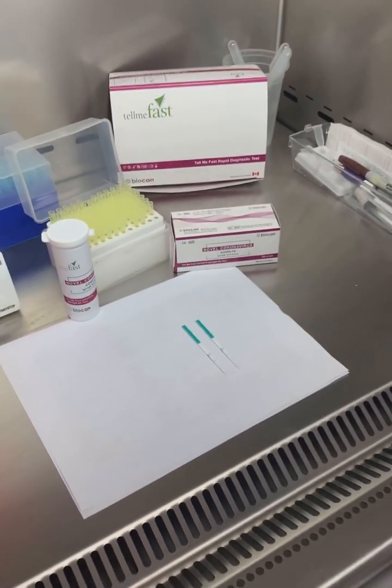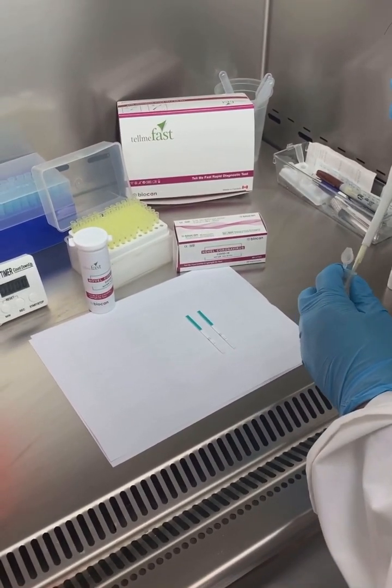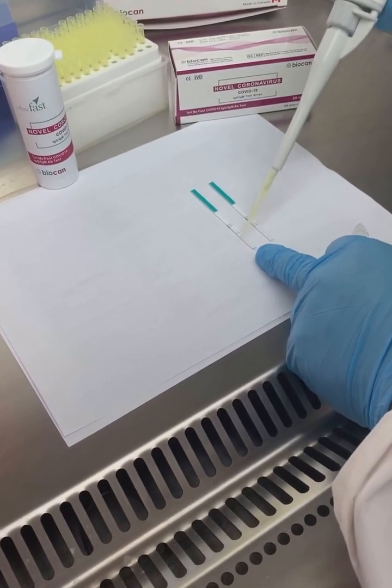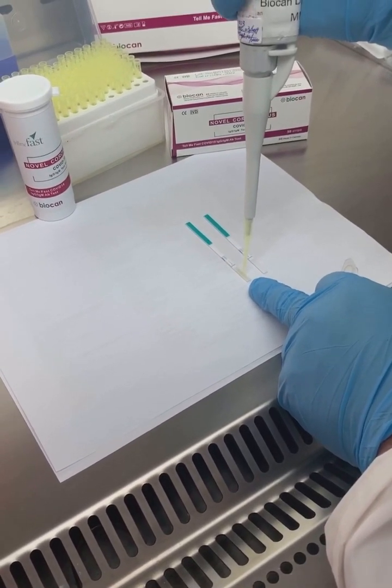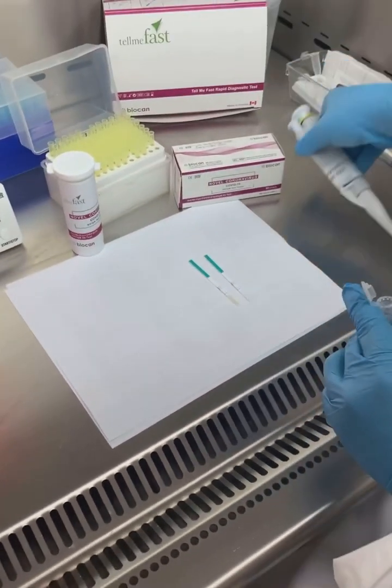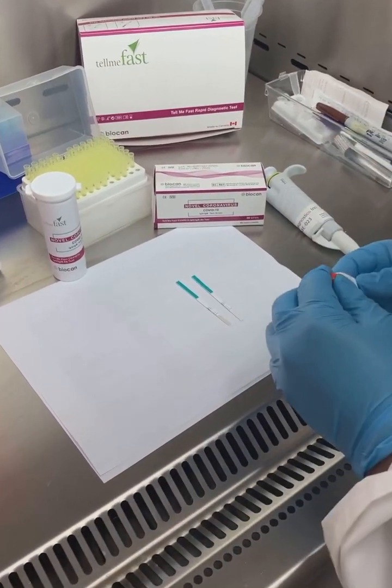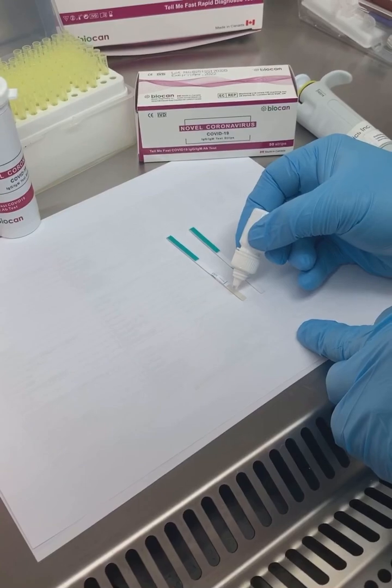We're going to be performing the test using serum. Pipette 10 microliters of serum plasma onto the sample pad of the test strip. Then add two drops of the buffer onto the sample pad of the test strip.